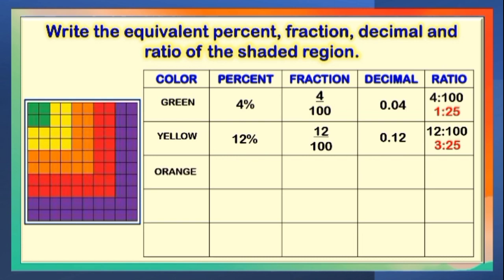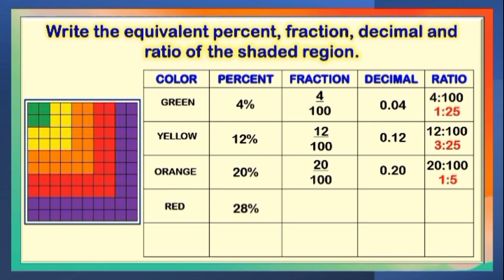The third region is shaded in color orange. The answers are 20%, 5 out of 100, 0 and 20 hundredths, 20 is to 100, and the lowest term is 1 is to 5. The fourth region is shaded in color red. The correct answers are 28%, 28 out of 100, 0 and 28 hundredths, 28 is to 100, and the lowest term is 7 is to 25.